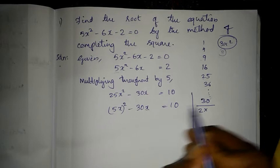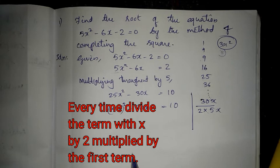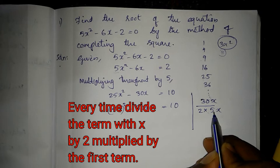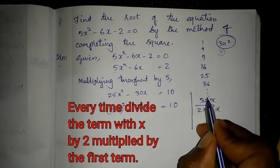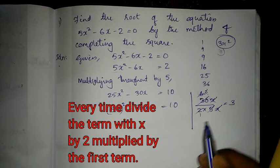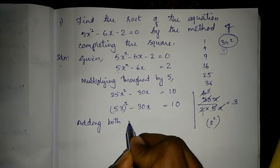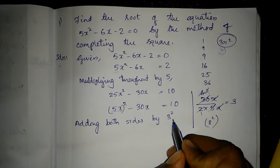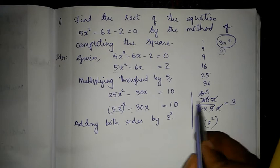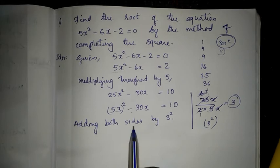Now check the middle term: take the second term as it is — that is 30x — and divide by 2 times the first term (which is 5x). So 30x ÷ (2 × 5x): 5 and 30 cancel (giving 6), x cancels, then 6 and 2 cancel to give 3. So we get 3. The square of 3, which is 3², must be added to both sides. Adding 3² to both sides: 25x² minus 30x + 3² = 10 + 3².